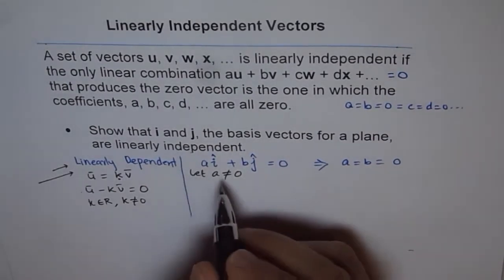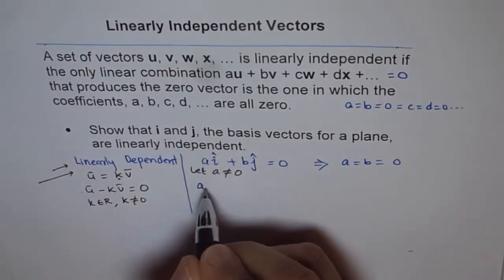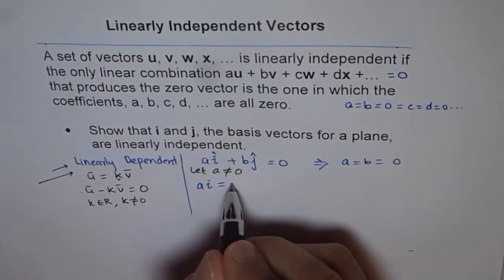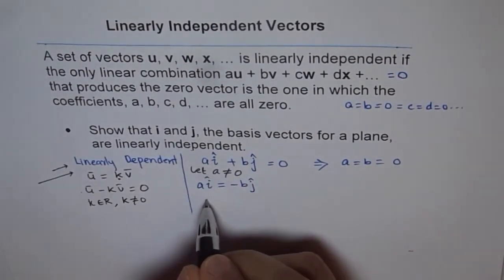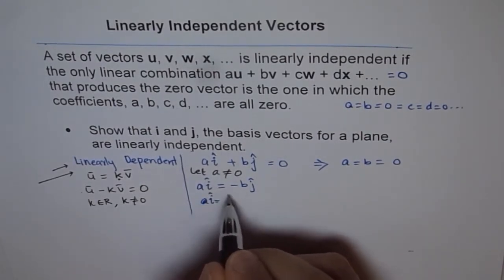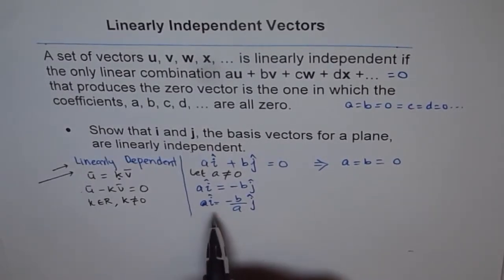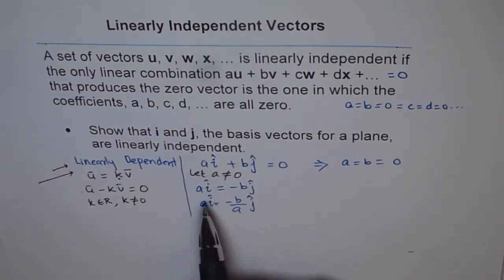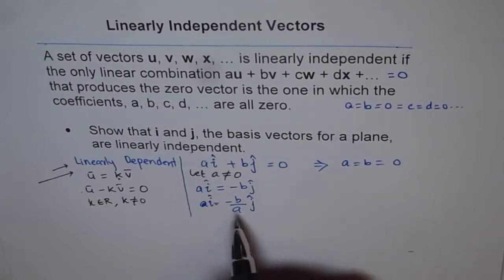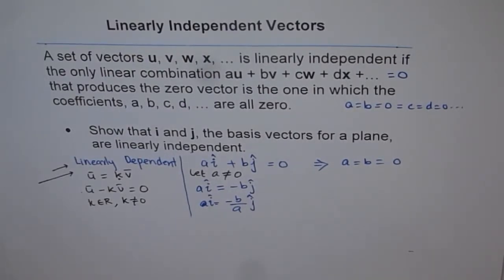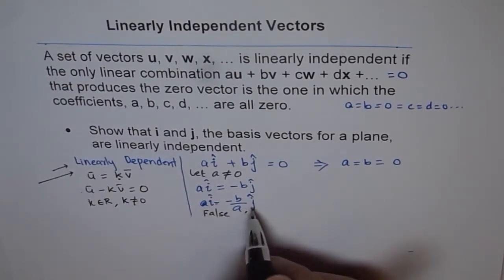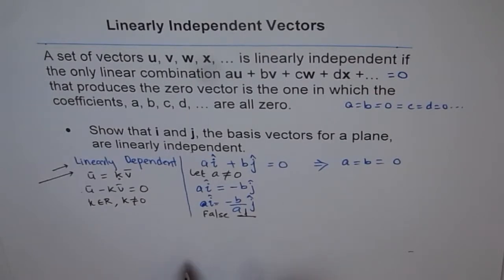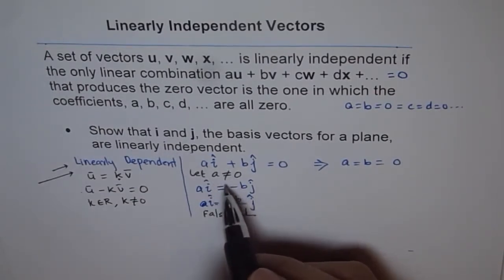If a is not equal to 0, then from a·i + b·j = 0 we get a·i = −b·j, and therefore i = −(b/a)·j. That would indicate that i is a scalar multiple of j, meaning i and j are parallel. But that is not possible since we know i and j are not parallel — they are perpendicular. So this statement is false, and a not equal to 0 does not work.